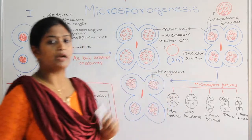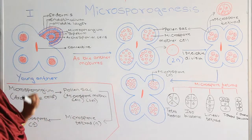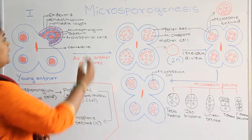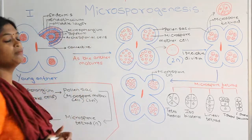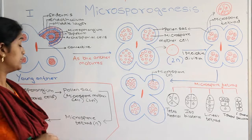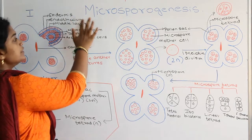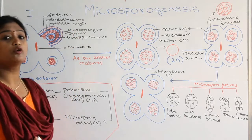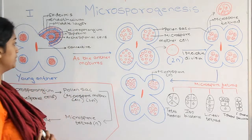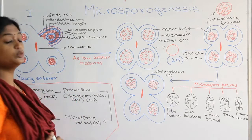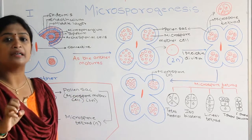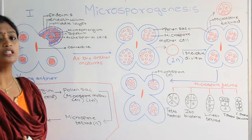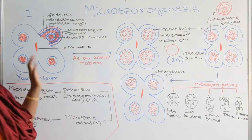Before studying microsporogenesis, let's see what happens in the young anther. The young anther consists of the outer epidermis; beneath that is the endothecium; beneath that are two to three layers of the middle layer. These three layers constitute the anther wall. Beneath this middle layer we have the microsporangium, which consists of tapetum cells, and inside the tapetum cells we have the closely packed sporogenous cells called the archesporial cells.